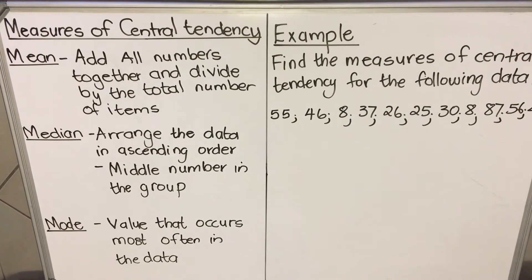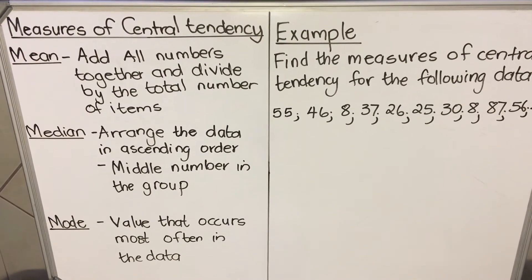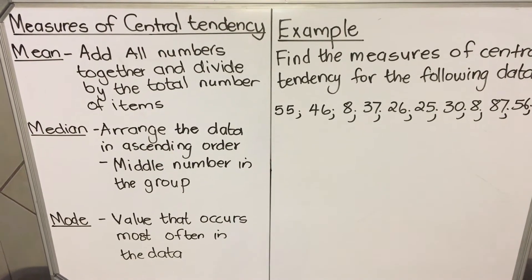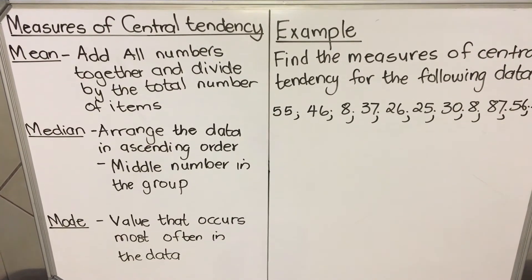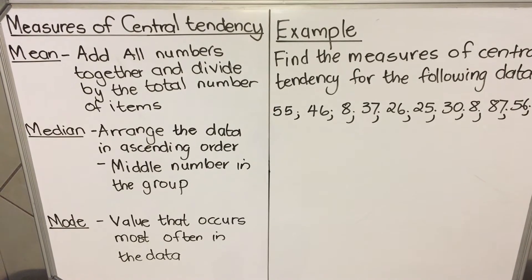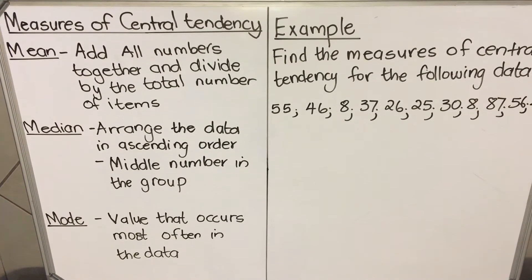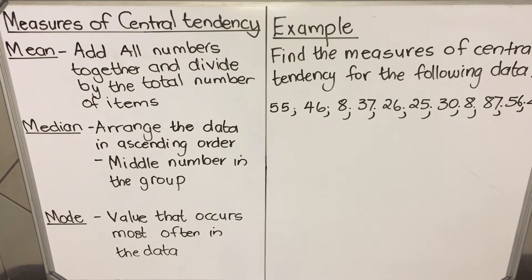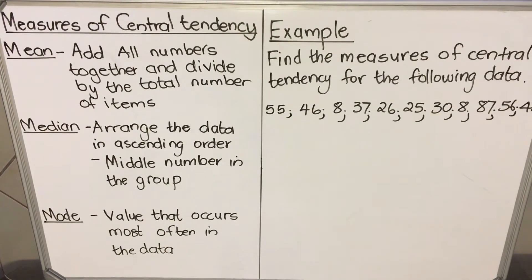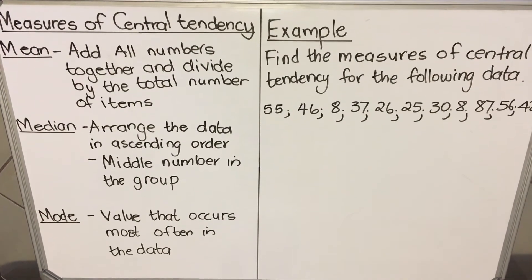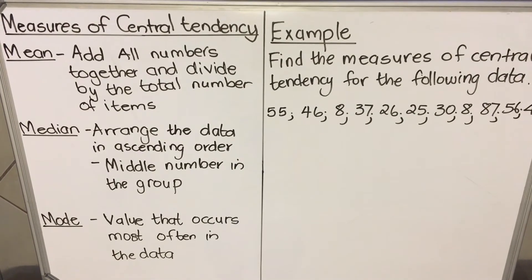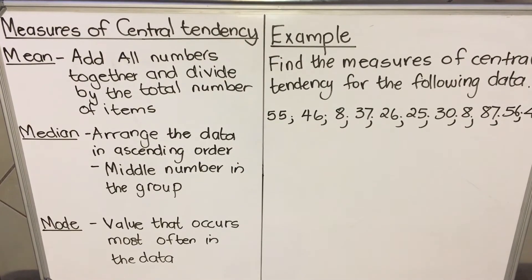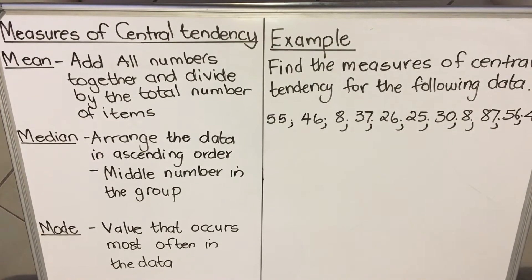The median is the middle number, but it's not just the middle number. You have to arrange your data in ascending order first. Ascending order means you start with the smallest one up to the biggest one. If you just pick the middle number and it's not arranged in ascending order, that's not the median. So you arrange your data in ascending order first and then you find the middle one — that will be your median.